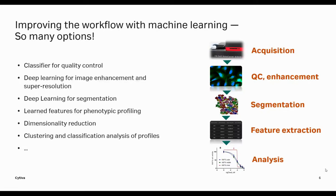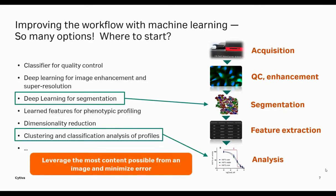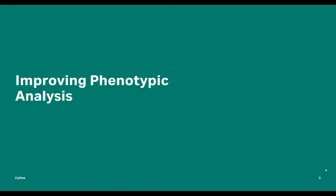With so many options, it can be overwhelming as to where to start. At Cytiva, my team and I look for where we can make the biggest impact. We've settled on one guiding concept: high content screening is about leveraging the most content possible, and then making sure that content is of sufficient quality before going into the downstream analysis step.